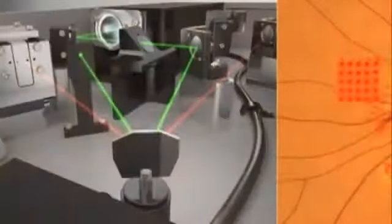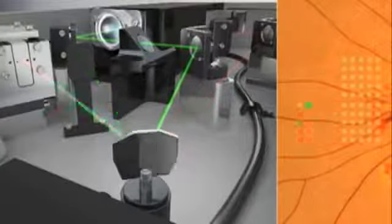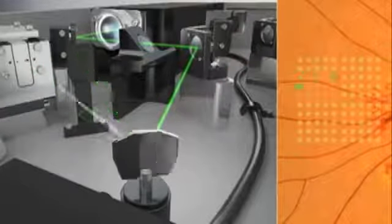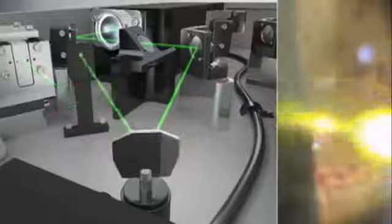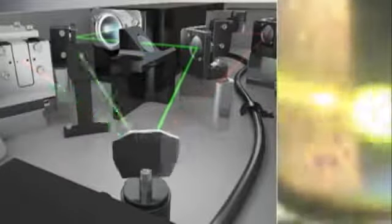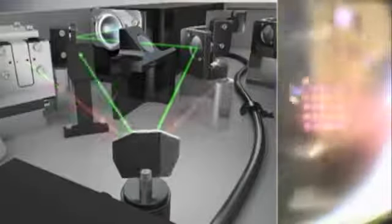The key to PASCAL is its proprietary advanced control system, which is fundamentally different from conventional lasers. PASCAL uses three high-speed computer-driven galvanometers to individually deliver each spot in the pattern, resulting in a 25-spot PRP pattern being delivered in approximately 500 milliseconds.